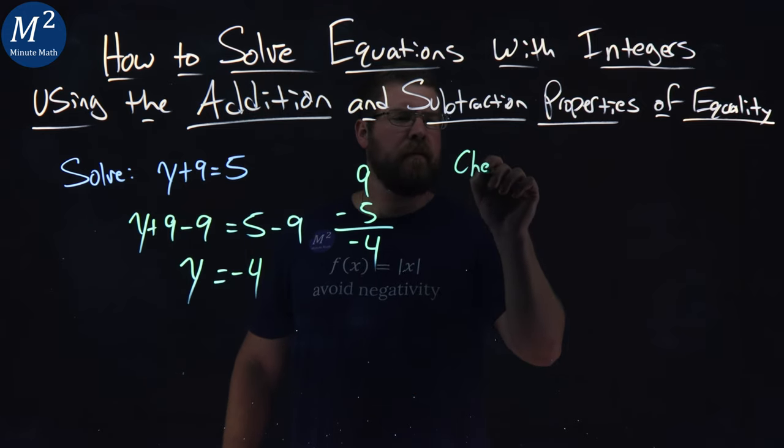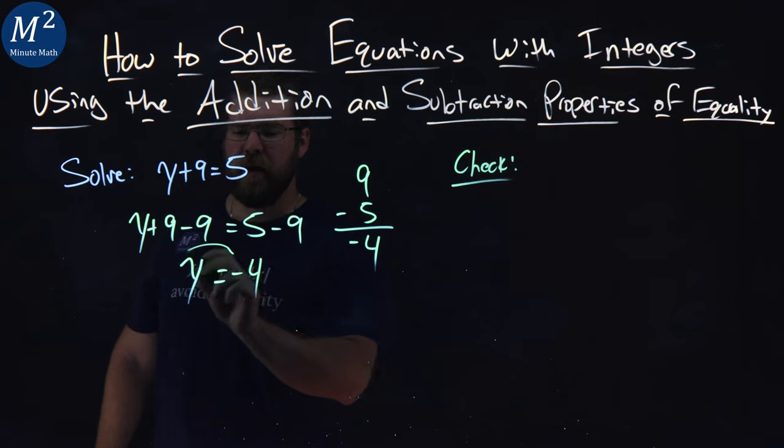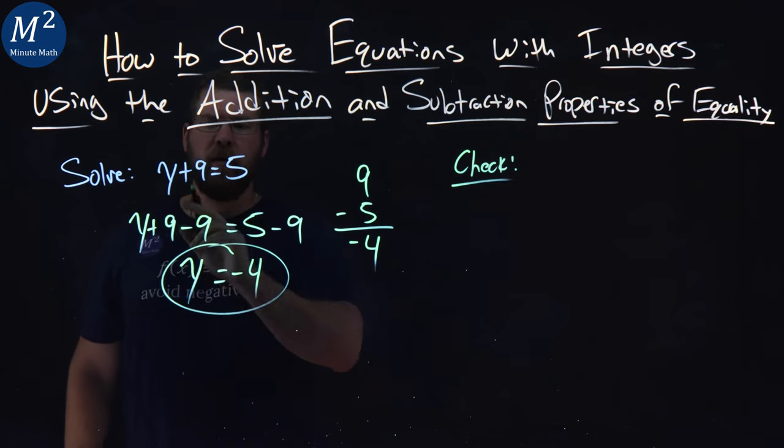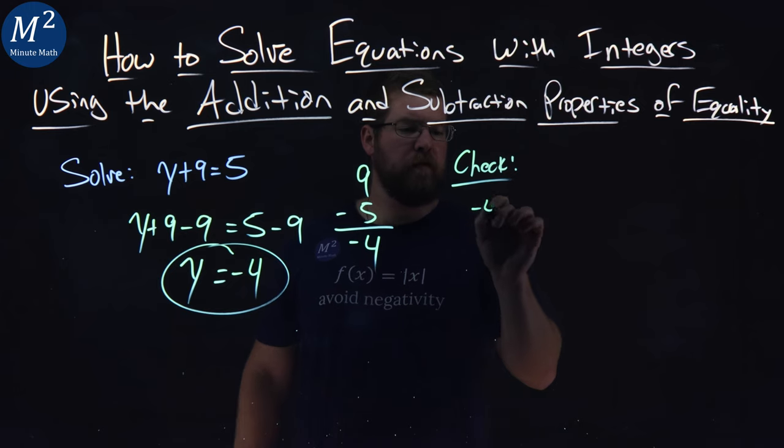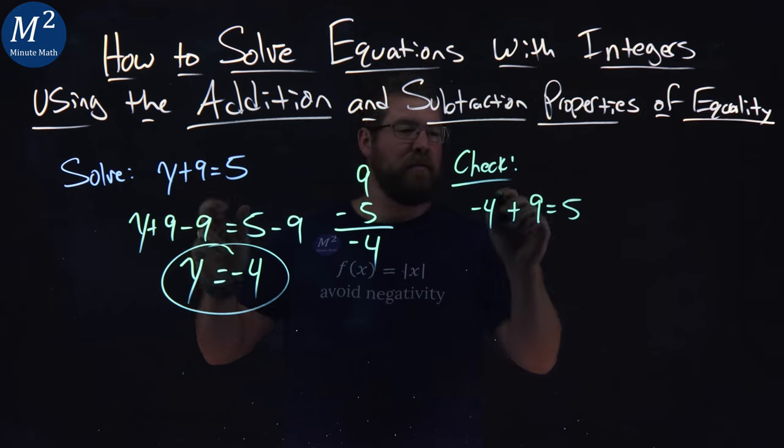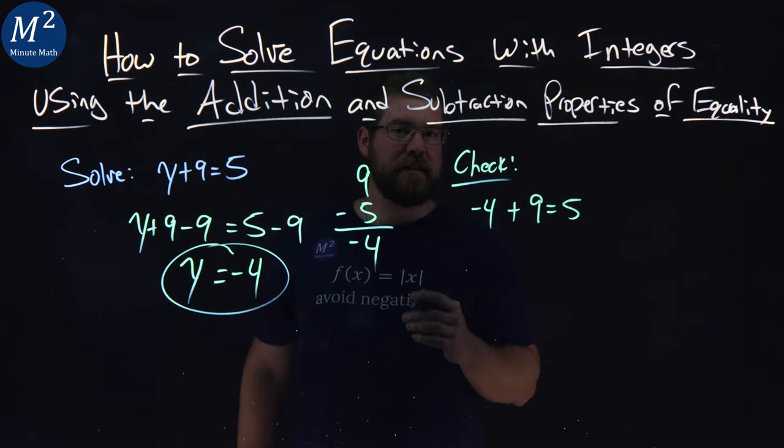Now let's go check that. We got our answer, y equals negative 4. Let's see if it's right. How to check it. I take negative 4 and plug it in for y. Negative 4 plus 9 equals 5. In our equation, y plus 9 equals 5, and we're going to simplify.